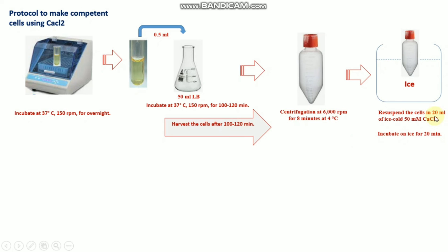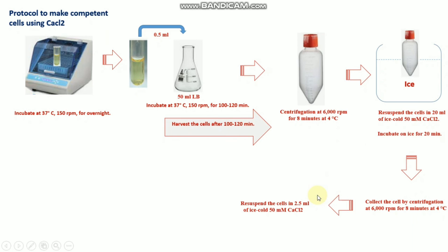Discard the supernatant and resuspend the cells in 20 ml of ice-cold 50 mM calcium chloride, then incubate on ice for 20 minutes. Collect the cells again by centrifugation at 6000 rpm for 8 minutes at 4°C. Discard the supernatant again and resuspend the cells in 2.5 ml of ice-cold 50 mM calcium chloride.